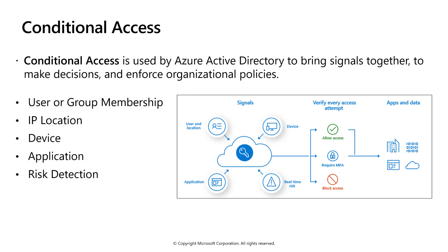The modern security perimeter now extends beyond an organization's network to include user and device identity. Organizations can utilize these identity signals as part of their access control decisions. Conditional access is the tool used by Azure Active Directory to bring signals together, make decisions, and enforce organizational policies. Conditional access policies are simply if-then statements — for example, if a payroll manager wants to access the payroll application, they are required to perform multi-factor authentication to access it.